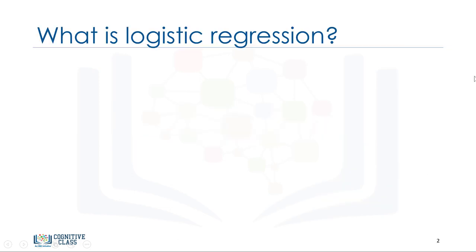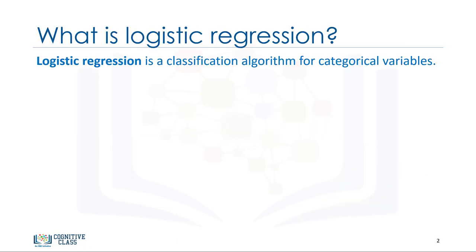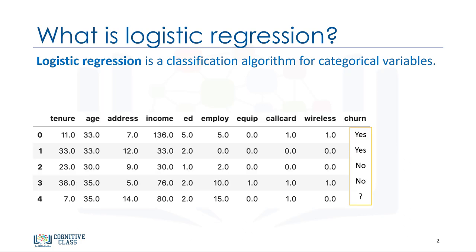Logistic regression is a statistical and machine learning technique for classifying records of a data set based on the values of the input fields. Let's say we have a telecommunication data set that we'd like to analyze in order to understand which customers might leave us next month.